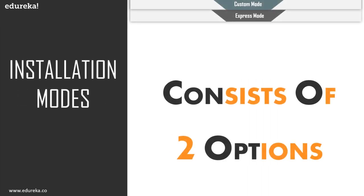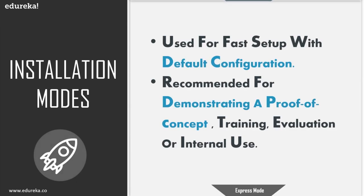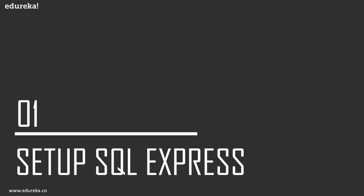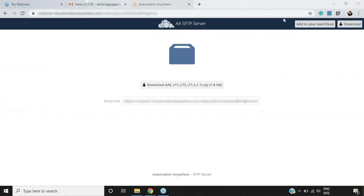Before I start with the installation of Automation Anywhere, I'd like to mention that Automation Anywhere Enterprise Edition can be installed in either Express mode or Custom mode. We'll be going forward with Express mode because I just want to install Enterprise Edition on my system with default configurations. Custom mode is designed for enterprises where hundreds of PCs are using Automation Anywhere and the company wants specific configurations. Since we're just installing on our system, I'm choosing Express mode.